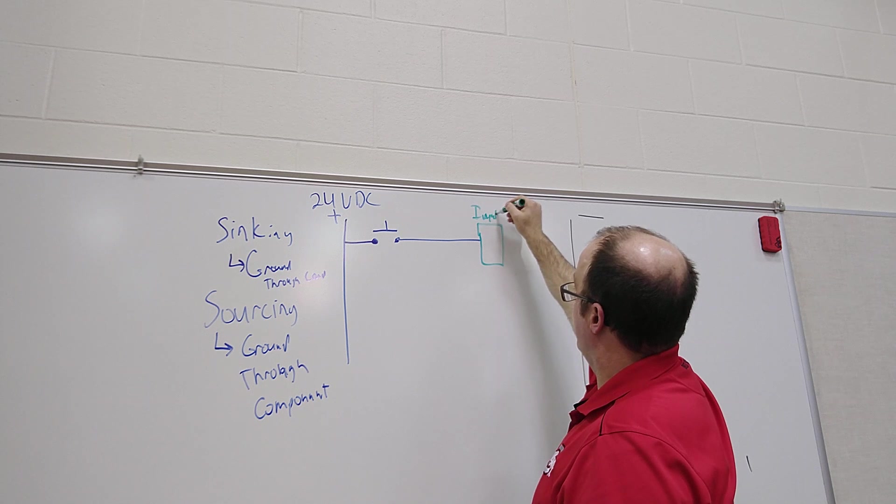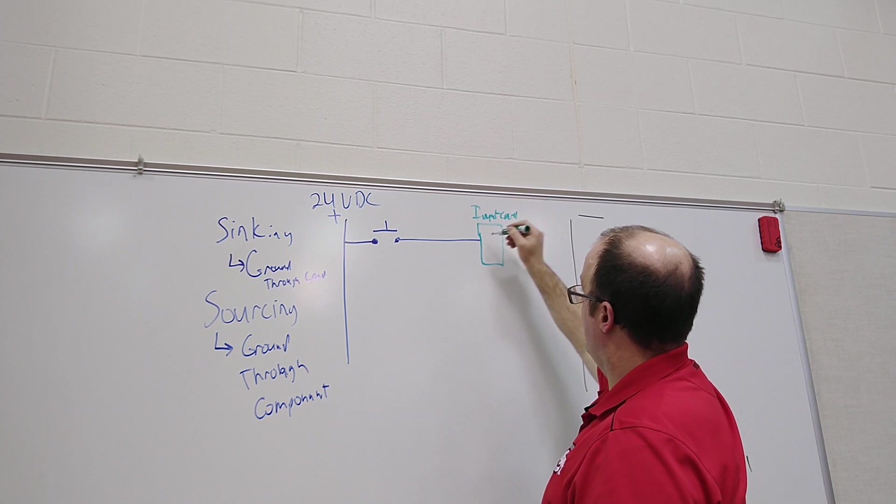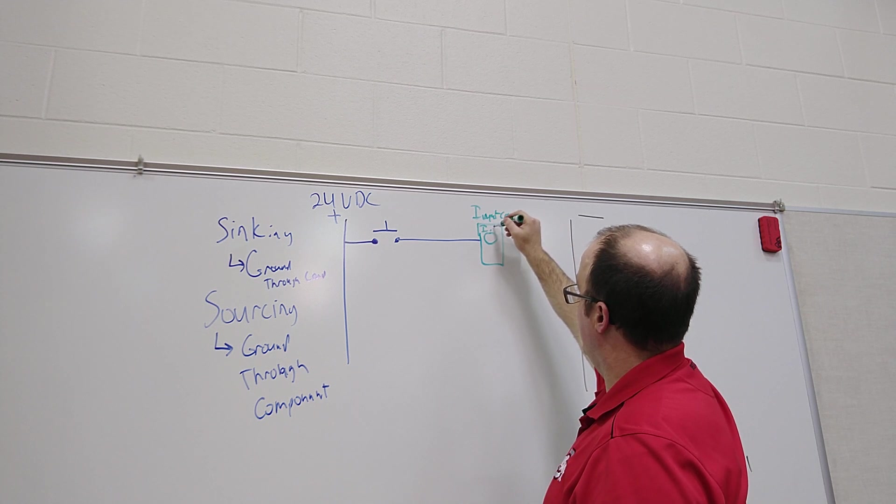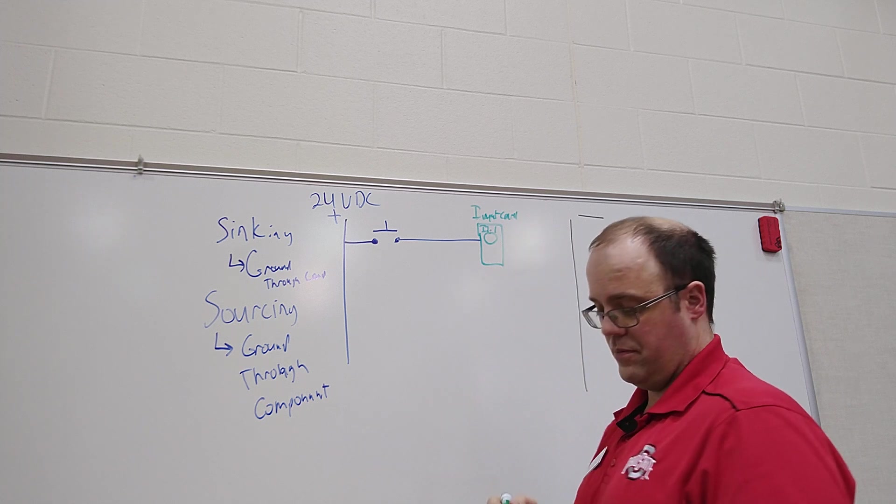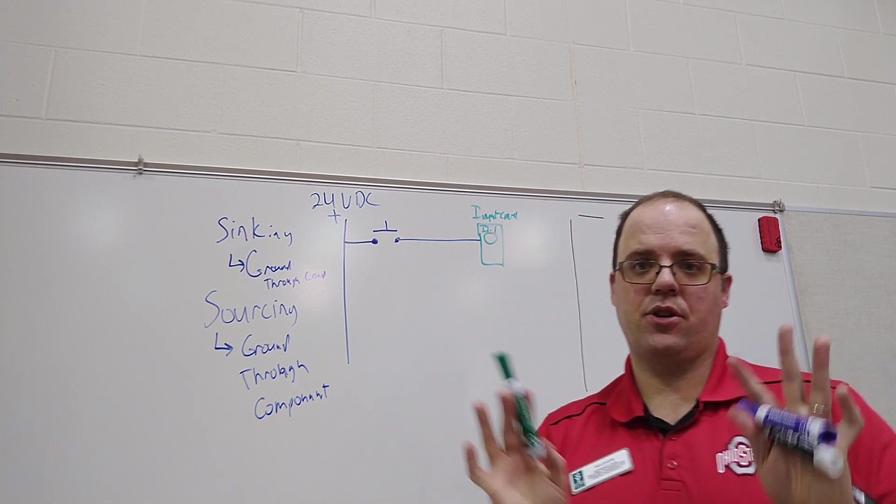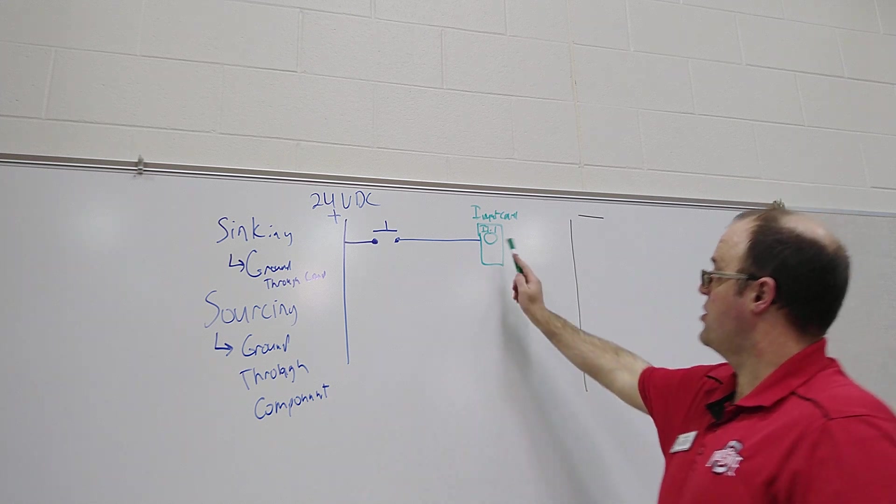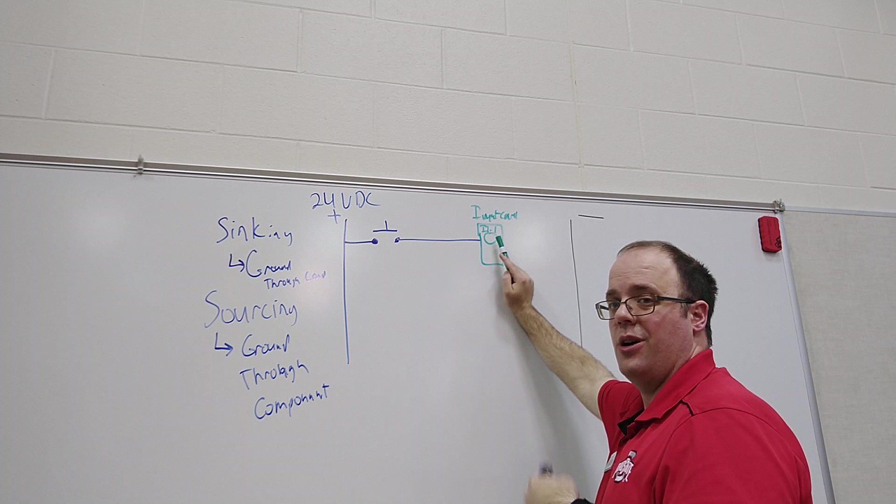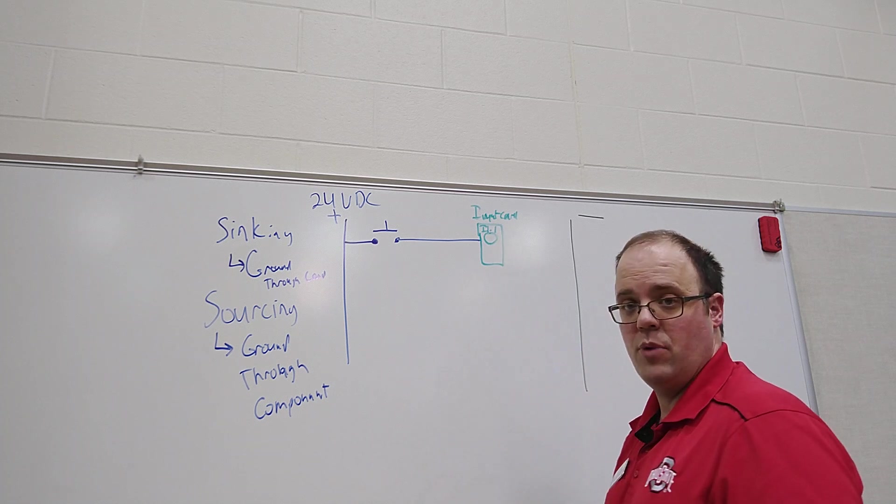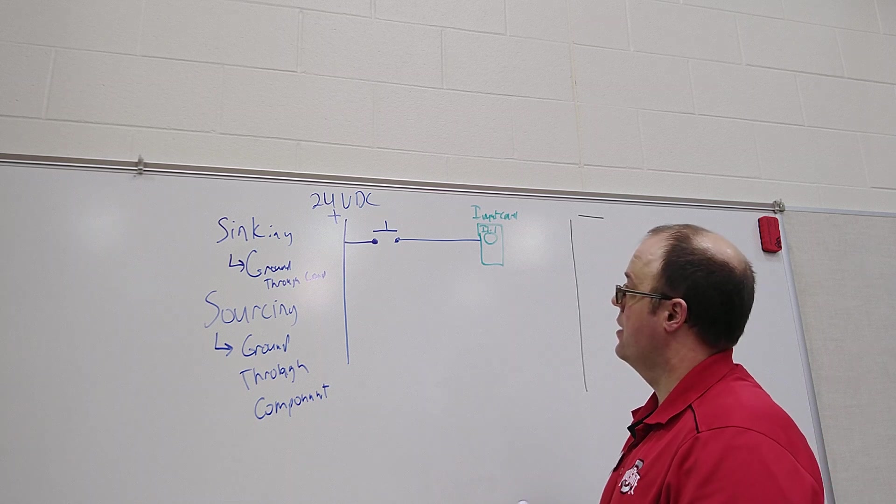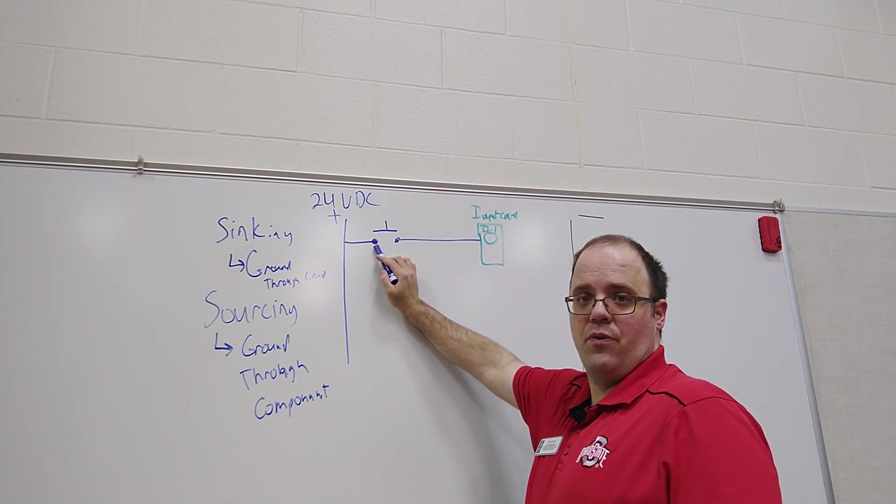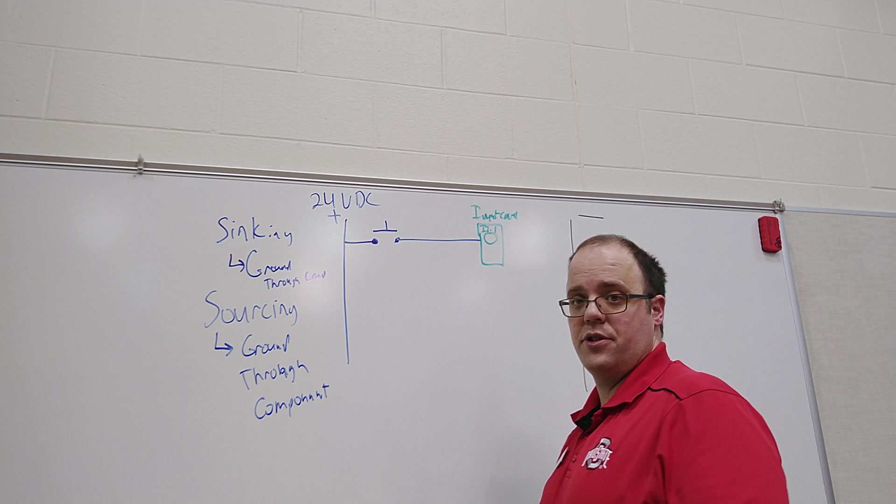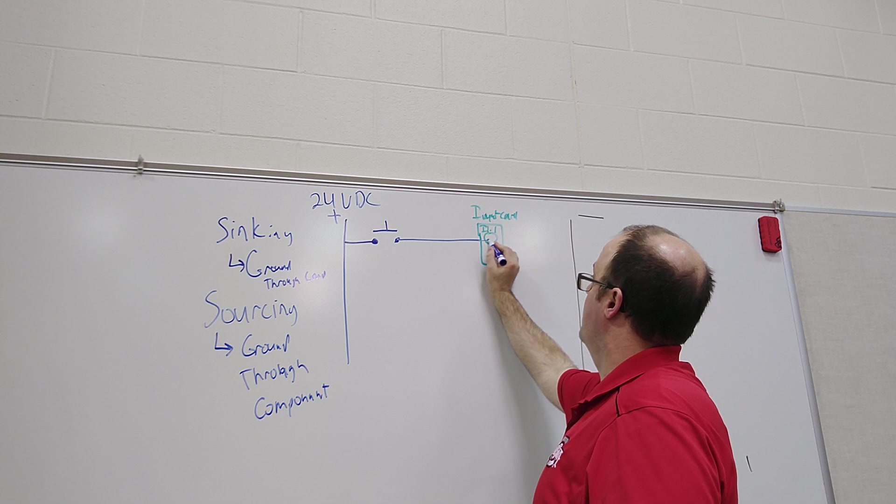And we'll call that I dot I1 dot 1. Just go with it, it could be anything. But every terminal on an input card has one screw to it and it's going to be labeled some way, so I'm just going to call this I1 dot 1. And so I'm going to take a positive voltage to one side of my switch and then run the negative to the other to this screw terminal. So that'll go right into that screw terminal.